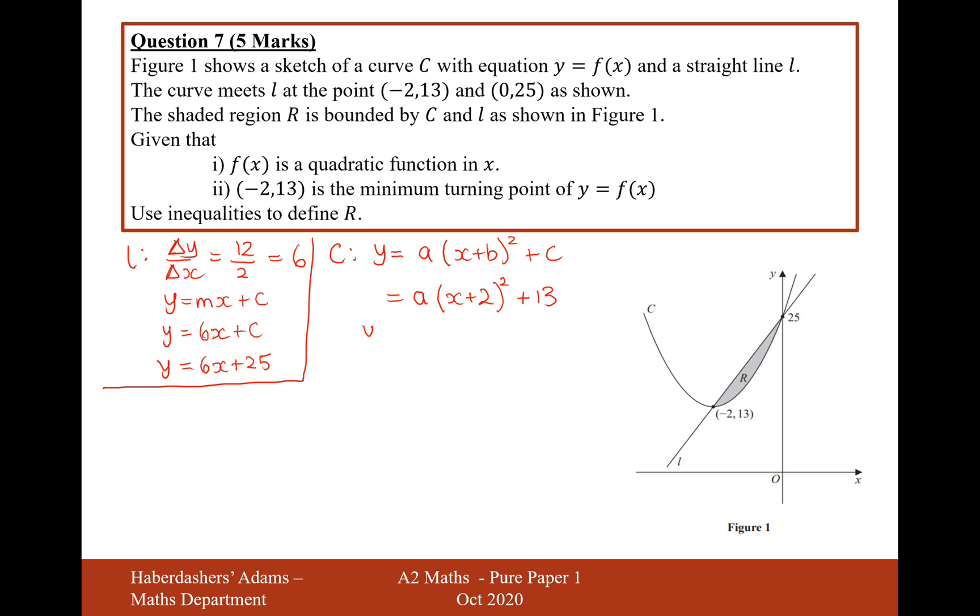So now what I'm going to do is I'm going to expand these brackets. It's going to be ax squared plus 4ax plus 4a plus 13, and now I just need to identify that my graph will go through 0, 25 as well. So 25 equals 0 squared times a, that's 0. 4 times a times 0, that's 0. So it equals 4a plus 13.